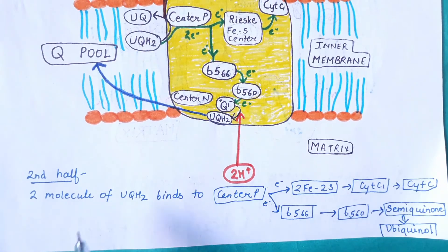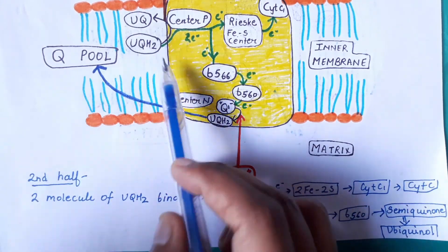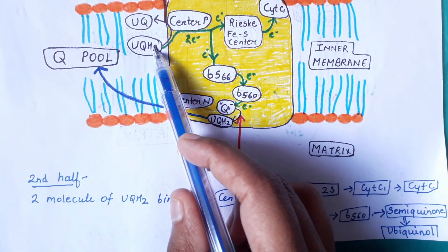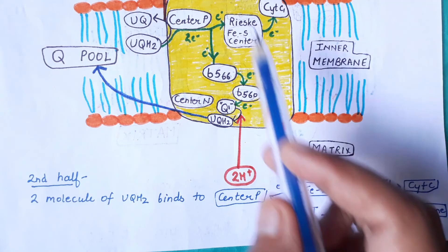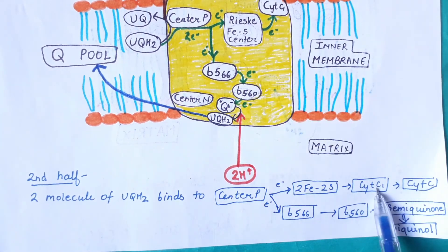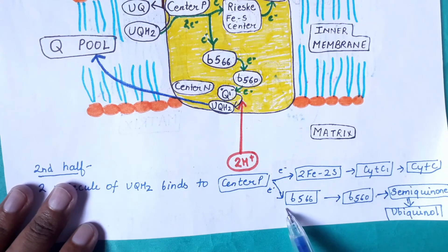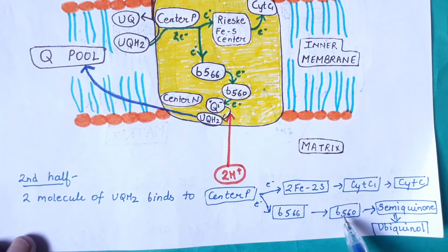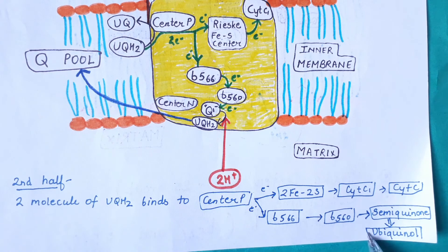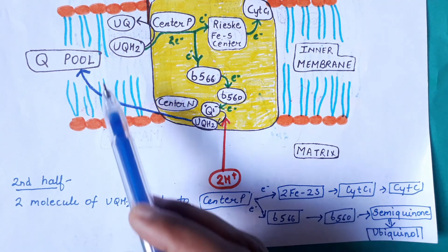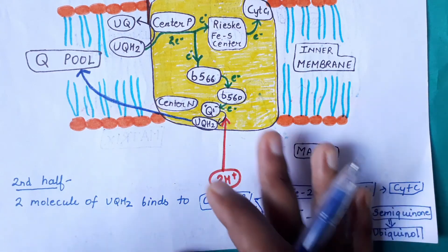To summarize the second half: a second molecule of ubiquinol binds to center P; the first electron goes via the Rieske iron-sulfur center to cytochrome C1 and then to cytochrome C; the second electron travels through B566, then B560, and is accepted by the semiquinone to form ubiquinol. This newly formed ubiquinol returns to the Q pool to participate in the cycle again.